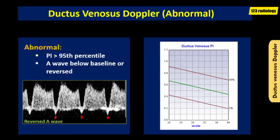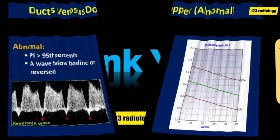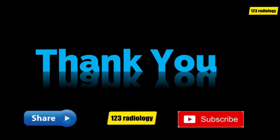Abnormal findings include the absence or reversal of the A wave, which is associated with increased risk of aneuploidy and congenital heart disease. In monochorionic twins, reversal of the A wave is a marker for increased risk of developing twin-twin transfusion syndrome. When a reversed A wave is depicted in a fetus with fetal growth restriction, this finding indicates that fetal survival is unlikely beyond one week. Thank you very much for your attention.